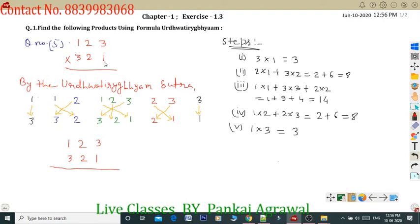First unit digit 3 and 1, you can arrange this. First two digits 32 and 12, you can arrange like this. And first three digits 321, 123, you can arrange like this. Then last two digits, then last one digit. You can see here, by arrow symbol, we have shown here.